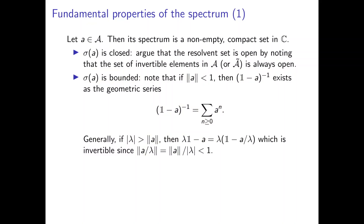Generally, if we have a lambda which has a larger absolute value than the norm of A, then this element can be factored such that A divided by lambda has norm less than or equal to 1, which means this expression is an invertible element. And from this it's pretty easy to show that the spectrum is, in fact, a bounded set.